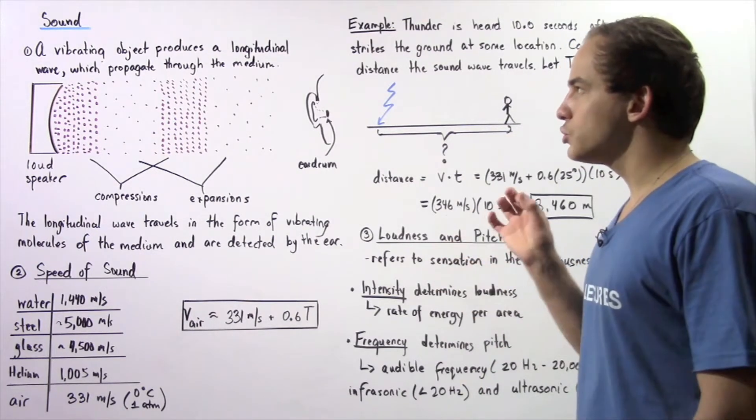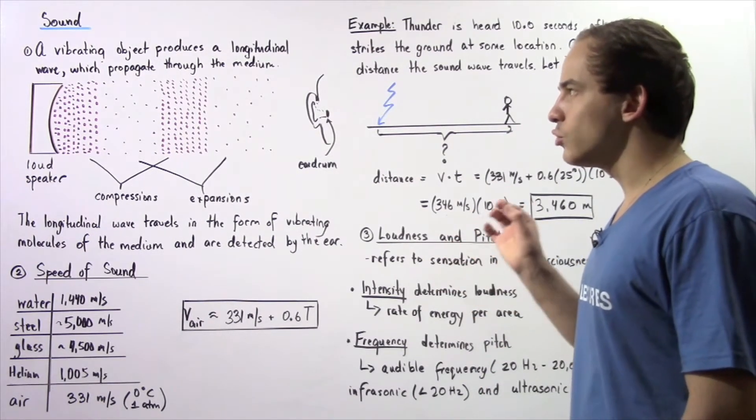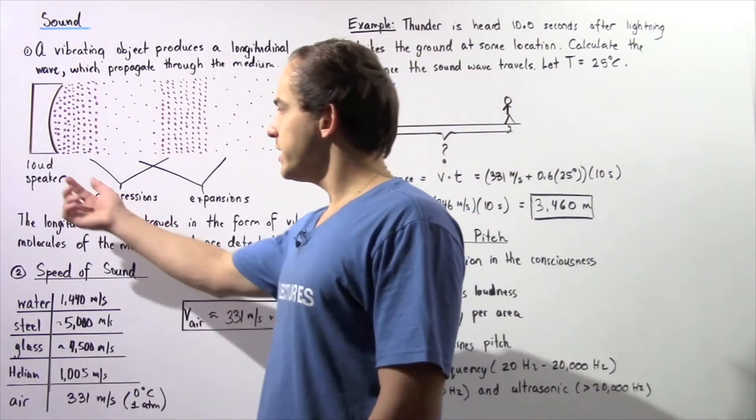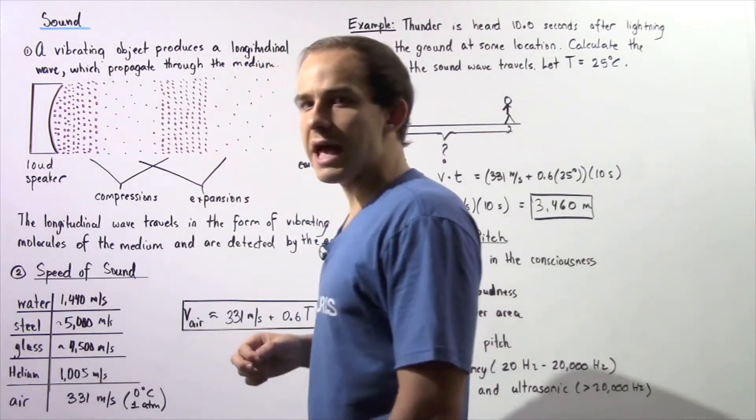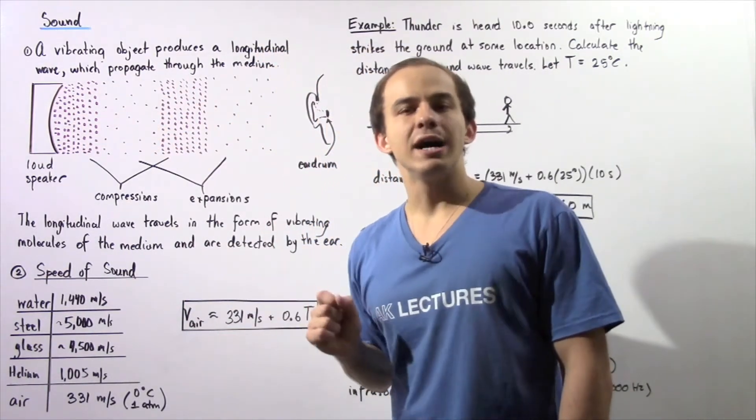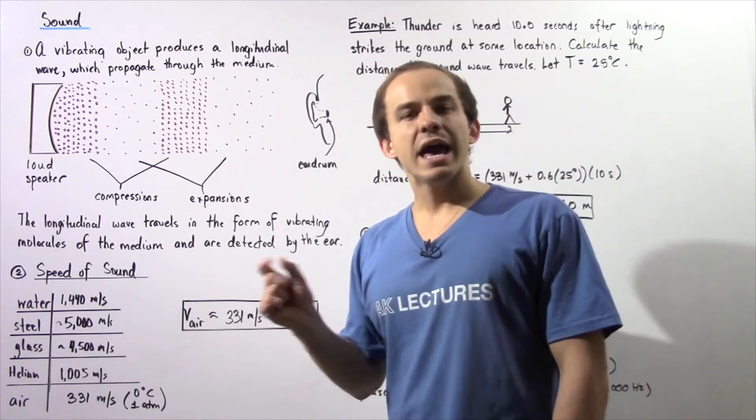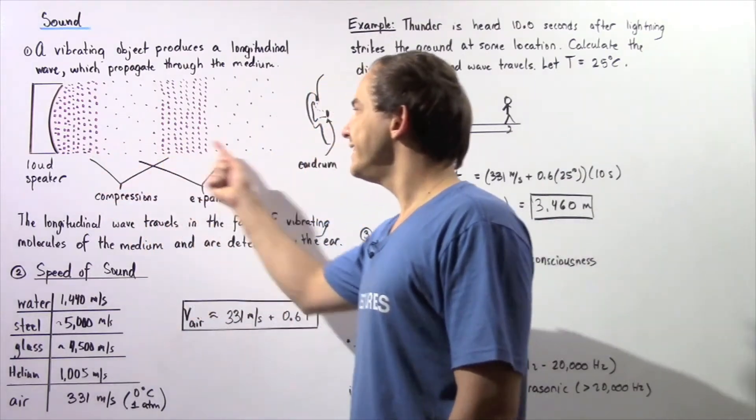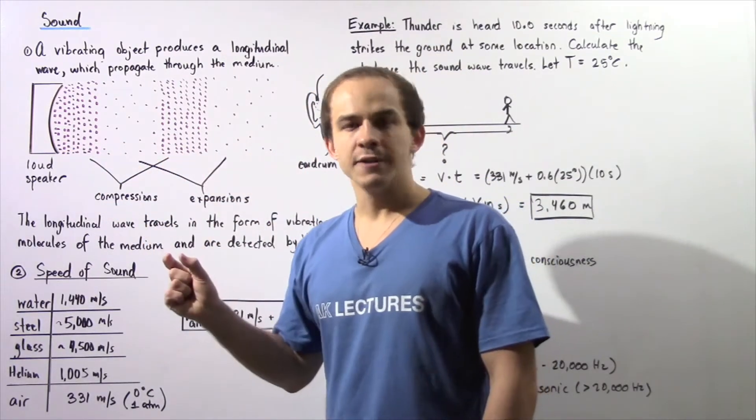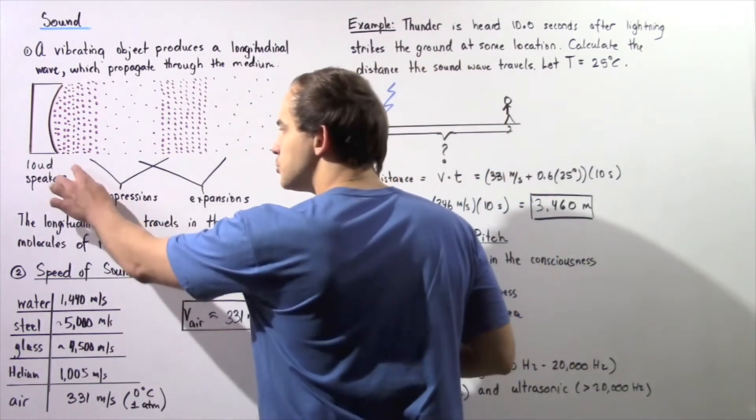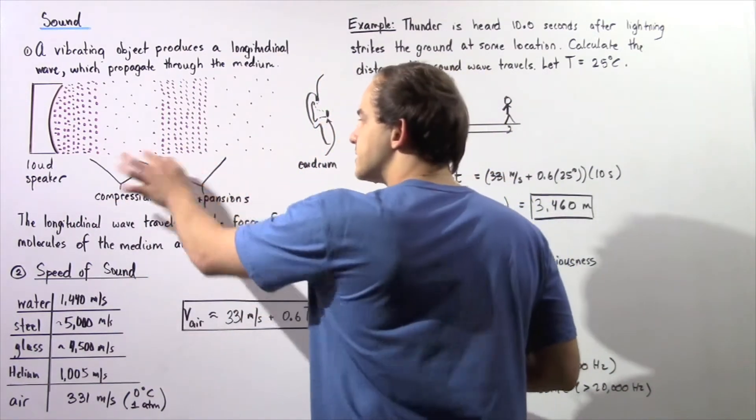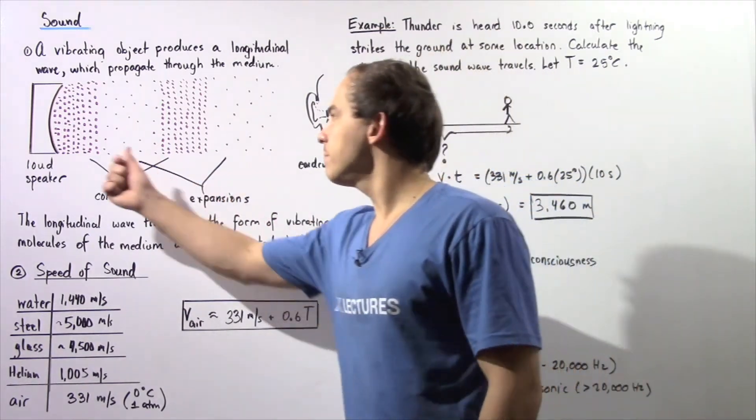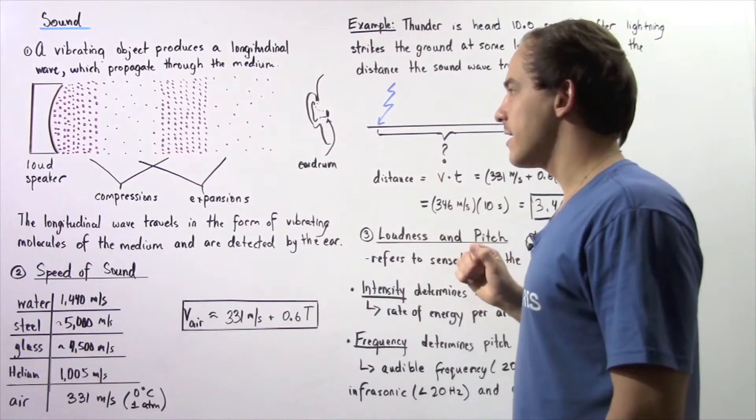A vibrating object produces a longitudinal wave which propagates through the medium. Let's suppose we have a loudspeaker, and the membrane of the loudspeaker begins to oscillate and vibrate. That vibration in turn causes the molecules found in the air to vibrate. It creates regions of compression and regions of expansion, and that's exactly how our sound wave propagates through the medium, through the air.